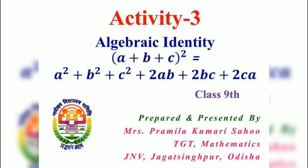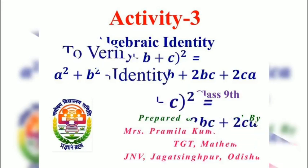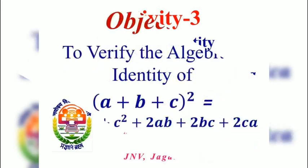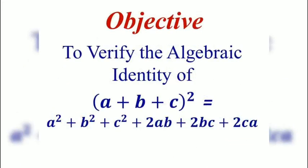So, let us prove this geometrically. The objective of our activity is to verify the algebraic identity, that is A plus B plus C whole square is equal to A square plus B square plus C square plus 2AB plus 2BC plus 2CA.